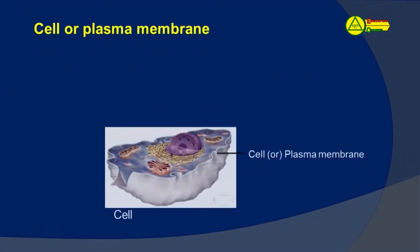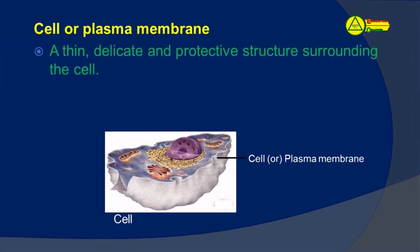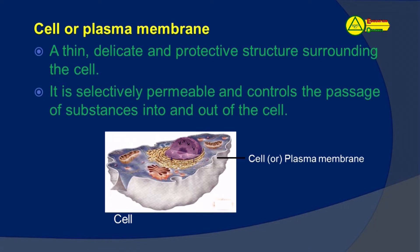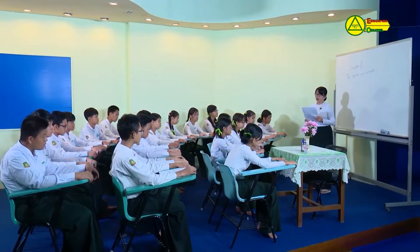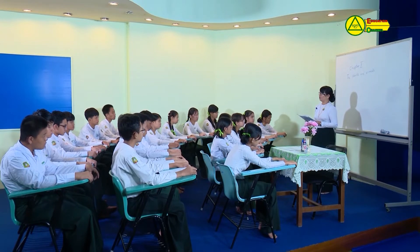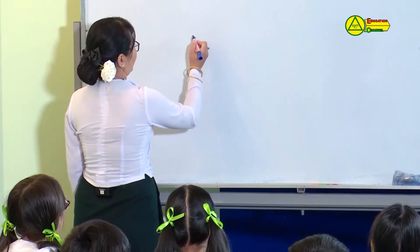The plasma membrane is a thin, delicate, and protective structure surrounding the cell. It is selectively permeable and controls the passage of substances into and out of the cell.